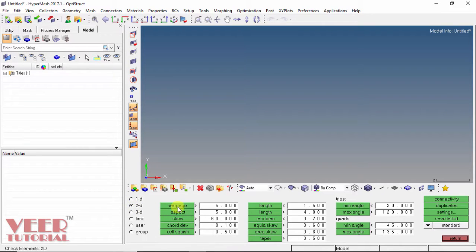We have Warpage, Aspect Ratio, Skewness, Chordal Deviation, Cell Squish, Minimum Length, Maximum Length, Jacobian, then Skewness, Taper, Minimum Angle, Maximum Angle, etc. So we will know in detail what are these quality check elements.